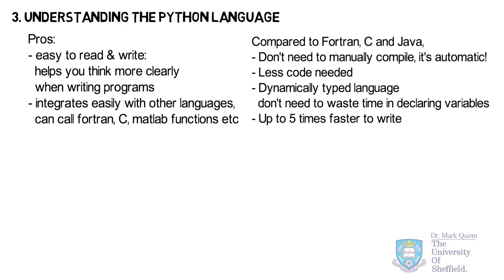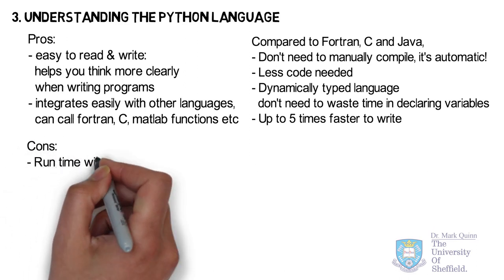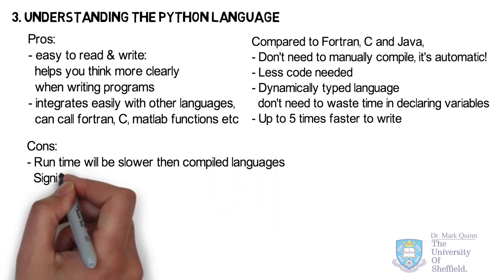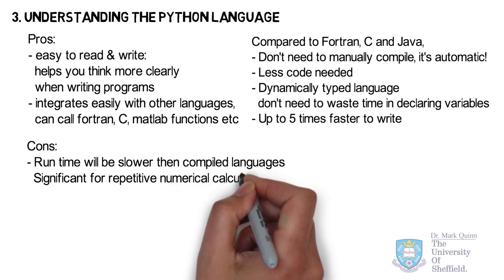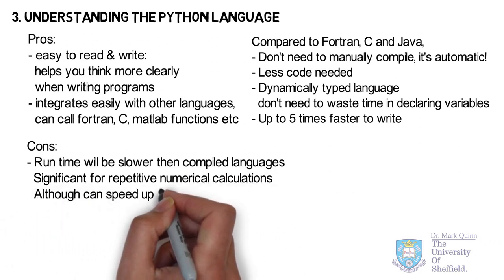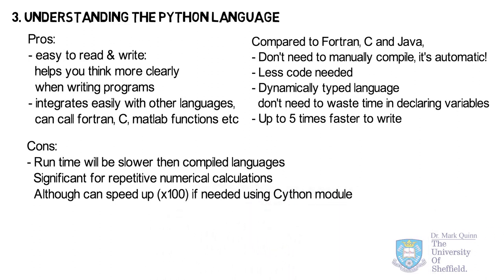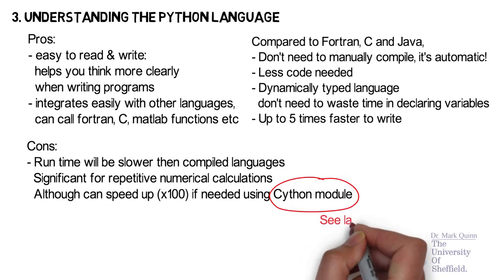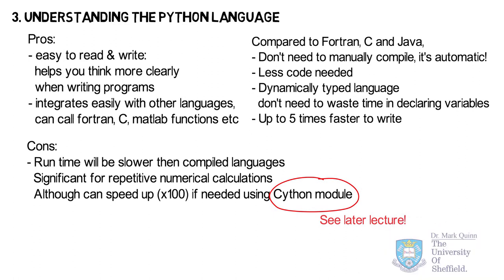However, because it's not compiled, its runtime — the time it takes for commands to be executed — is slightly longer, and in some cases much longer, such as for repetitive numerical calculations. In such cases it is possible to optimize the Python program significantly, by a factor of a hundred, using a module called Cython. We'll look at optimization methods further in a later lecture. In summary, for most computational and numerical work, this slightly longer runtime will not be noticeable.